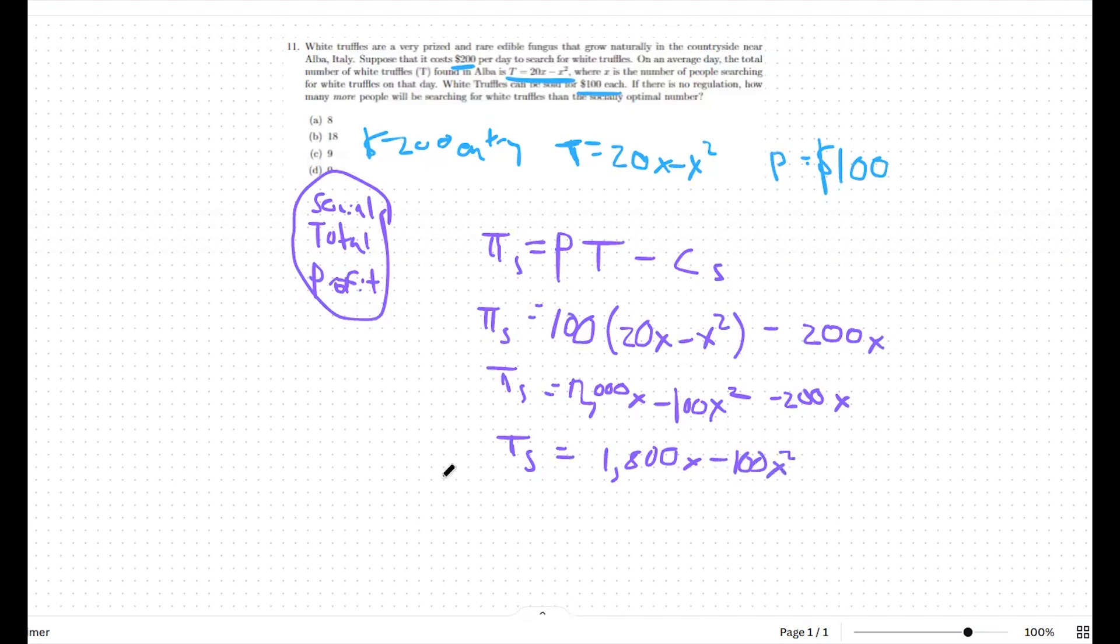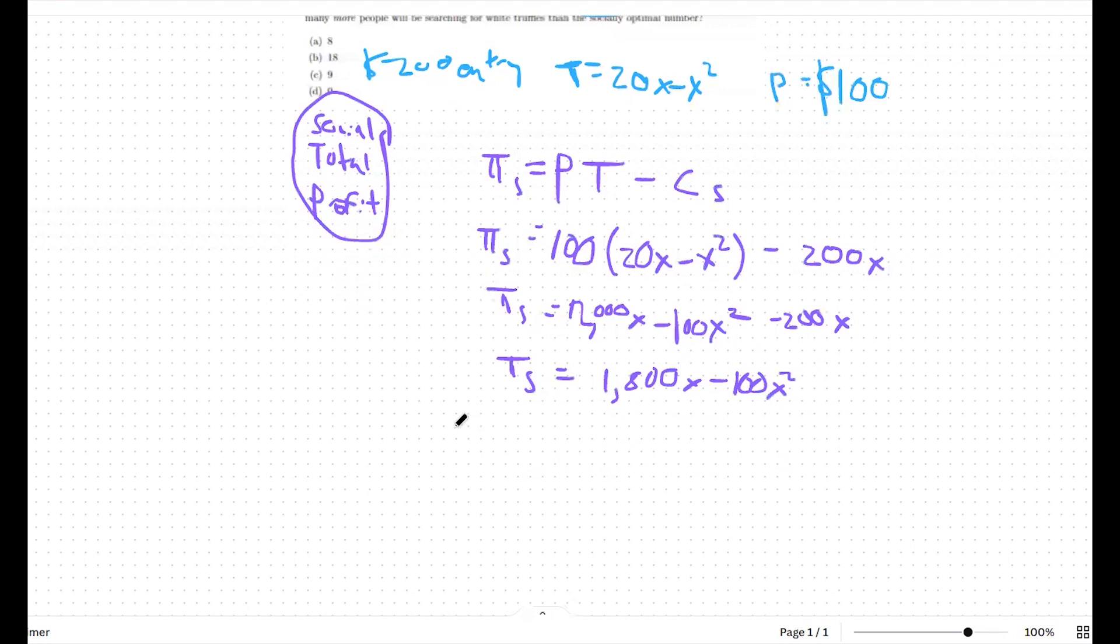From there, if we're trying to maximize our social profit, we should take the derivative of our social profit with respect to x. This leaves us with 1800 minus 200x. And to maximize, we should set this equal to 0. So we're left with 1800 equals 200x. So the socially optimal number of people hunting truffles would be 9.